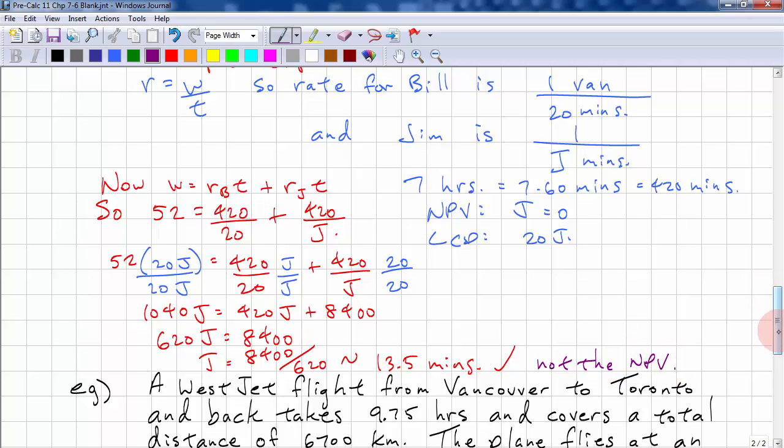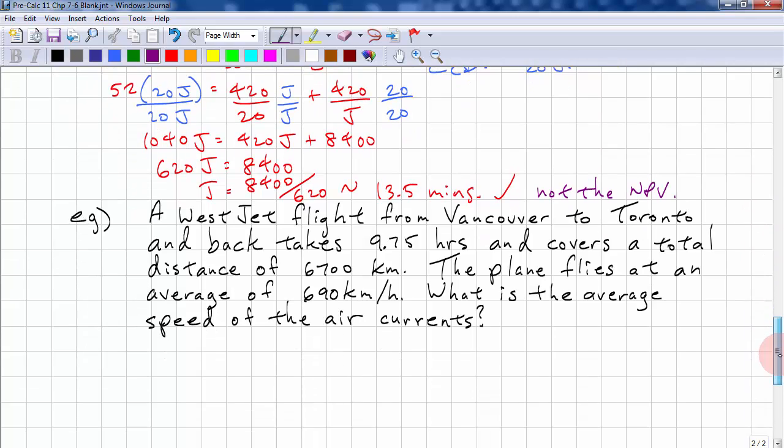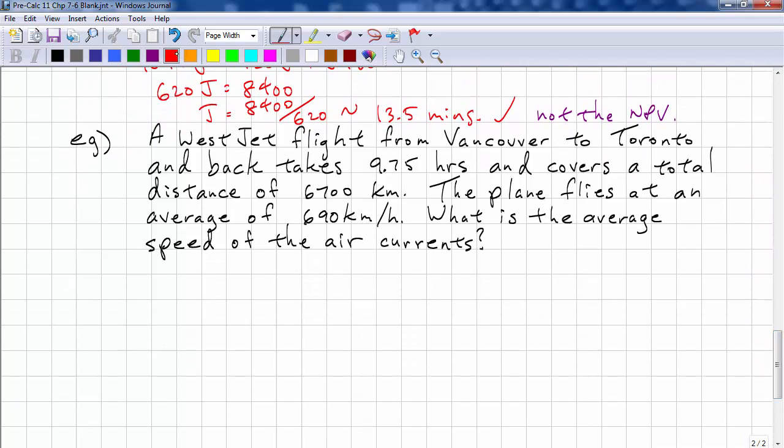Okay? Let's look at the last example. A WestJet flight from Vancouver to Toronto and back takes 9.75 hours and covers a total distance of 6700 kilometers. The plane flies at an average speed of 690 kilometers per hour. What is the average speed of the air current?